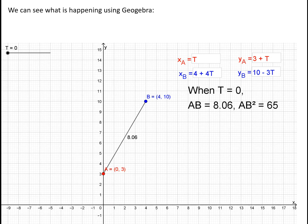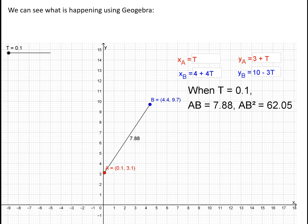We can use GeoGebra to plot and see what's happening to these two particles A and B. Here's our first plot. When t equals 0, A is at the point (0, 3) and B is at the point (4, 10). The GeoGebra app calculates the distance between A and B using Pythagoras' theorem — in this case the distance is slightly over 8 units. Moving to t equals 0.1, A and B are slightly closer together, with a distance of approximately 7.9. At t equals 0.2, the distance is approximately 7.7.